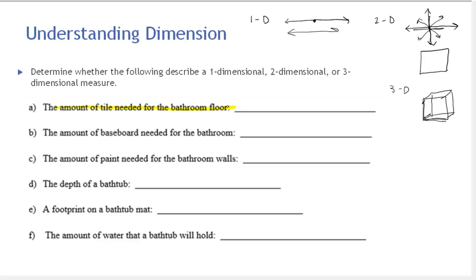The first question: the amount of tile needed for the bathroom floor. If you imagine your bathroom floor and the tile in it — does it look like a line, could it be filled with squares, or would you fill it with cubes? A bathroom floor can be tiled with little squares. Even though the tiles have some height, when you're ordering tile it already has a width, so we just think of the two dimensions we need. The amount of tile is dependent on the area of the bathroom floor — that's a two-dimensional measure.